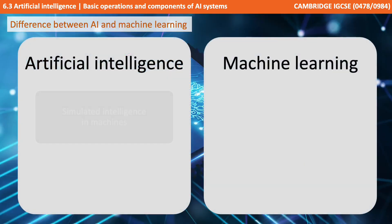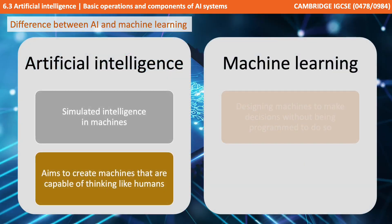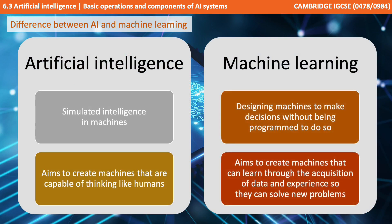So just so we're really clear, let's make sure we understand the difference. With artificial intelligence we're simulating intelligence in machines — we're aiming to create machines that are capable of thinking like humans. With machine learning we are considering the practice of designing machines to make decisions without being programmed to do so. Here we're aiming to create machines that can learn through the acquisition of data and experience so they can solve new problems.